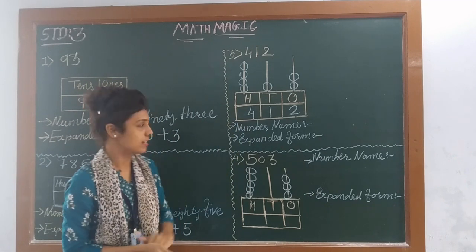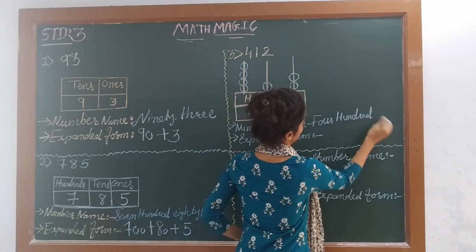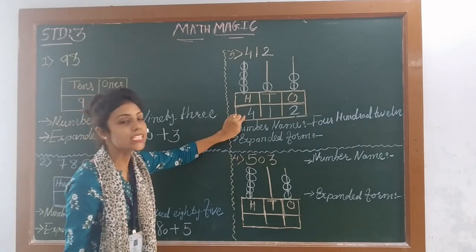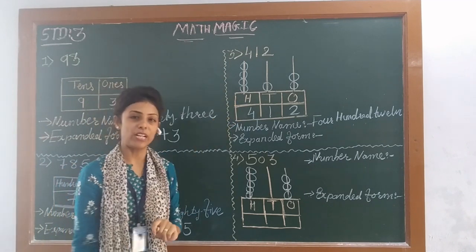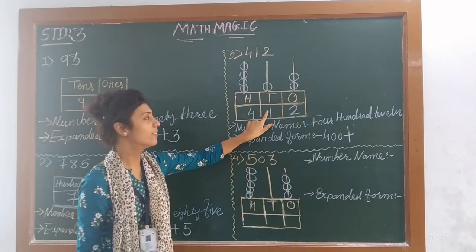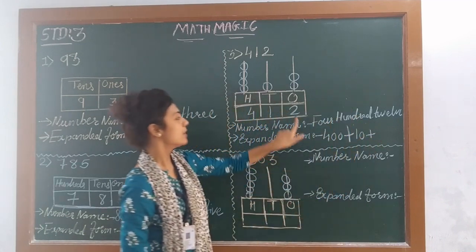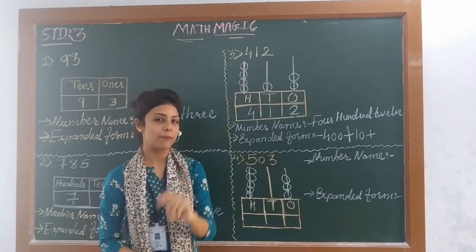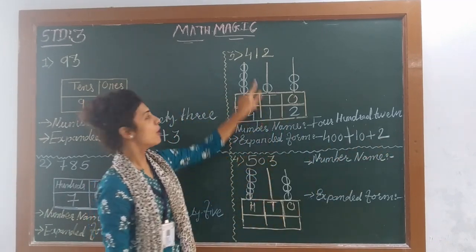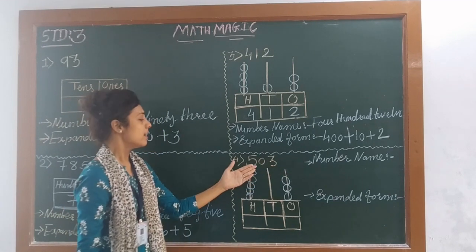So how to read this number? 4 hundreds and 12 — that is 412. Now the expanded form: place value of 4 is at 100's place, so 4 multiplied by 100 is 400, and we write plus. Then 1 is at 10's place, so 1 multiplied by 10 is 10, and then plus 2 — 2 is at 1's place, so 2 ones are 2. So the expanded form of 412 is 400 plus 10 plus 2.